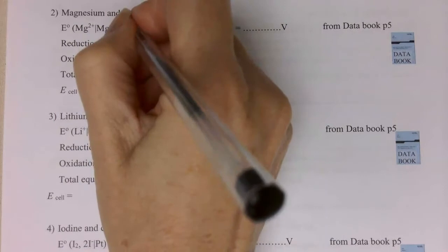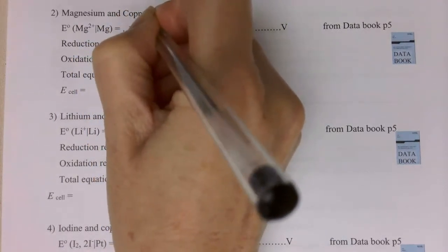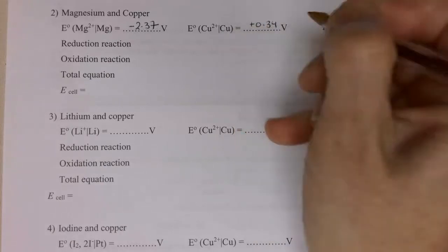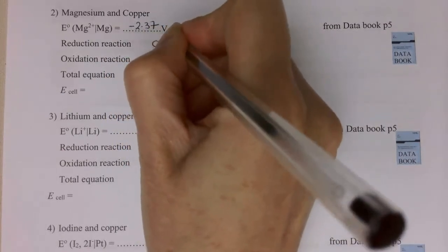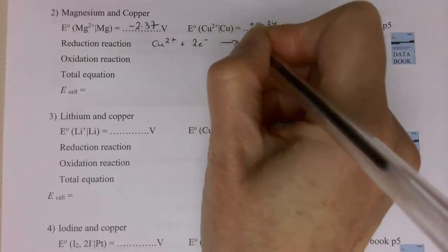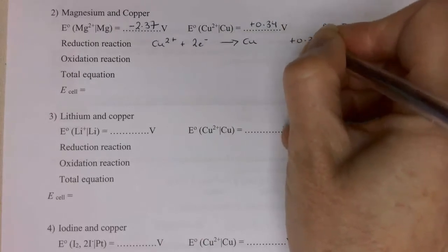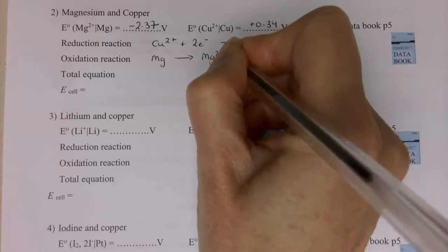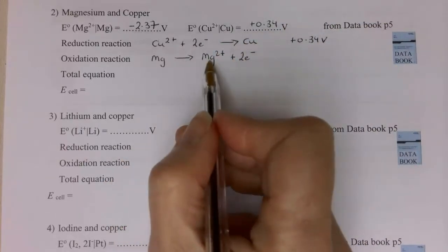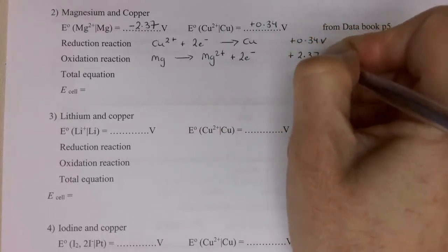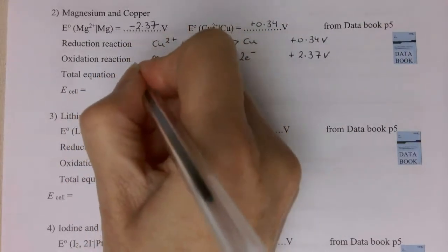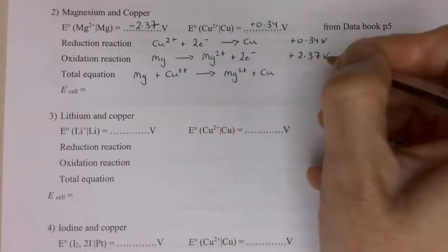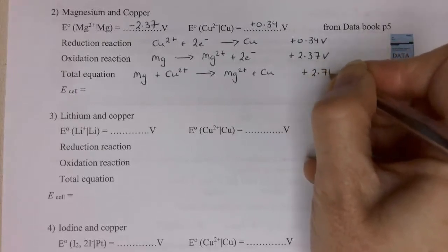Next example: magnesium has a value of minus 2.37. Magnesium is a very good reducing agent because it's very easily oxidised. Copper is plus 0.34. Copper is the more positive, so it undergoes reduction — a positive sign means it's good at undergoing reduction — at plus 0.34 volts. Magnesium is very easily oxidised; it's a very reactive metal and loses electrons very easily. Because magnesium goes in the opposite direction, I change the sign to plus 2.37 volts. Putting the two together, the electrons cancel, and I get plus 2.71 volts.